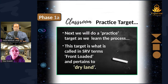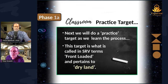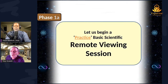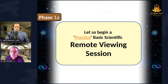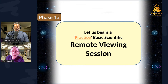Now everybody in the audience, you're going to actually practice. We're going to do a practice session, take a short break, and then do an actual session as well. This next target — I'm going to give you a little front-loaded information: it has something to do with dry land. Have a clean sheet of paper. We're going to do phase 1 now. Take a couple of breaths. Before we do the actual session, we'll do a little meditation and what's called the basic SRV affirmation.